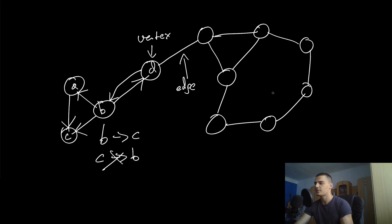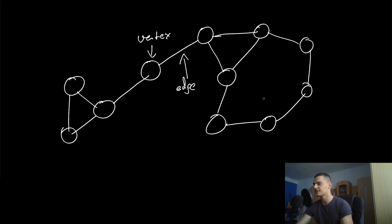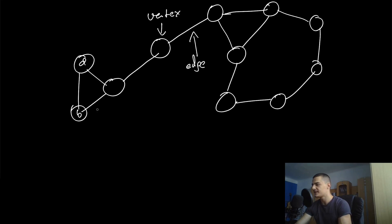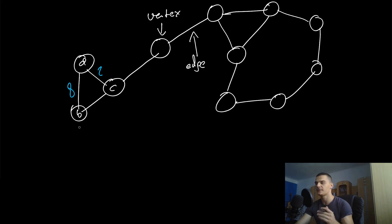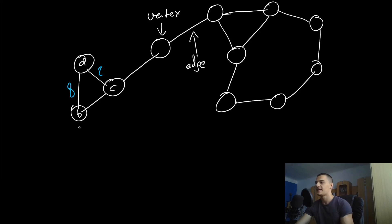Another property a graph can have is being a weighted graph. If this is A, B, and C, going from A to B is equally efficient as going from A to C when there are no weights. But if I say this connection has weight 2 and this one has weight 8, it's no longer equally efficient. For example, these numbers could represent kilometers.